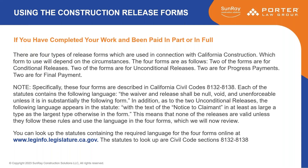I know that contractors try to add things into these releases, like things you may find in an indemnity clause, that don't belong in these releases. To the extent that occurs, it would make the release null, void and unenforceable. So keep your eye out for that. What you say to the contractor, owner, or sub — whoever gives one of these to you — is: the Civil Code says you can't change these things around. You have to use the language in the Civil Code, nothing more, nothing less.